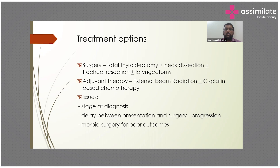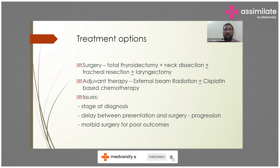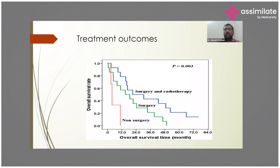You have to deal with counseling at an early stage based on clinical, FNAC, and imaging findings. Total thyroidectomy, neck dissection, central compartment clearance, tracheal resections, and laryngectomy may be required, but you will still need to give external beam radiation with or without cisplatin-based chemotherapy. Even with such a morbid procedure, overall survival without surgery is less than one year in most cases. With R0 or R1 resection and external beam radiotherapy in a non-metastatic setting, the patient may survive three to four years.